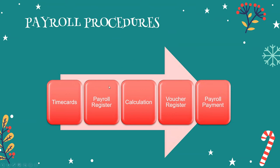From the payroll register, you calculate gross earnings and then all deductions. We have mandatory or statutory deductions: PhilHealth, Pag-IBIG, SSS, and of course withholding taxes. Once calculated, entries go into the voucher register and finally the payroll is paid out.